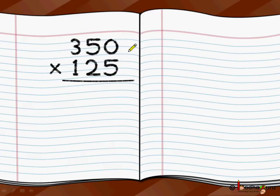There are 350 rupees collected per family and there are 125 such families. So how do we find the total money they're going to make? We are going to do multiplication. So we write 350 rupees per family multiplied by 125 families.